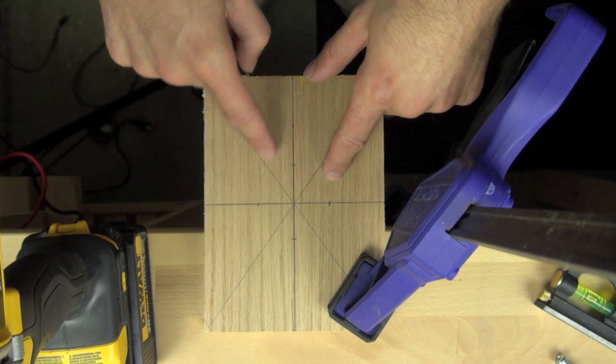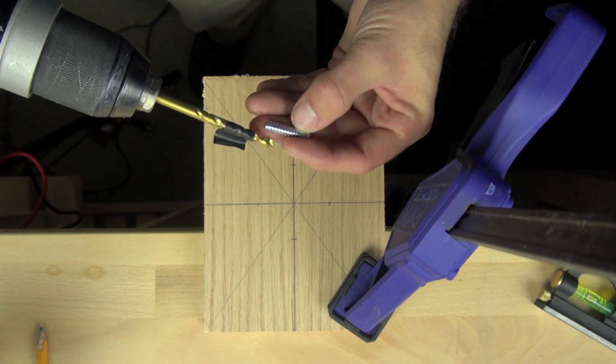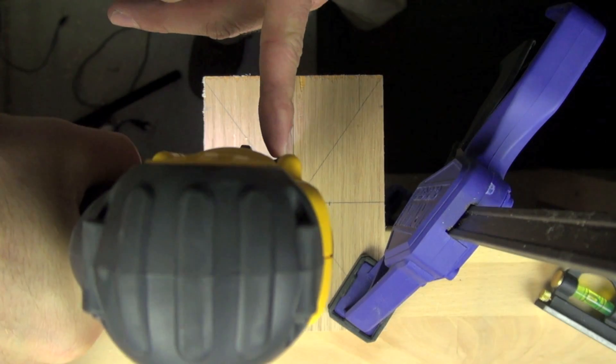So now that we have our intersection points marked, we're going to go ahead and drill our holes. We've taped the drill about a half an inch up, so we want the hole to go in about a half an inch.